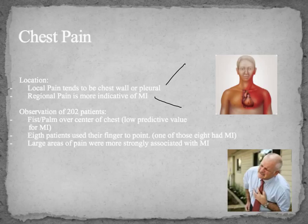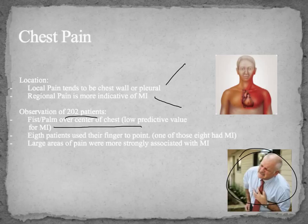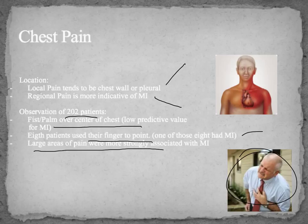There was an interesting study done where 202 patients were evaluated for chest pain. The ones that would place the palm over the center of their chest had low predictive value for myocardial infarction. So the classical presentation you see in a lot of pictures of an MI has a very low predictive value. Eight patients used their finger to point to a spot on their chest, and only one of those eight was presented with an MI. Patients that presented with large areas of pain had a stronger association for having an MI.